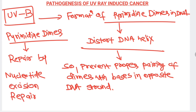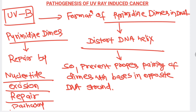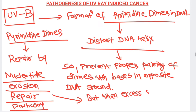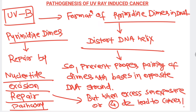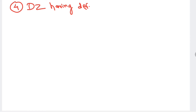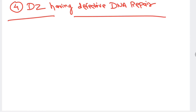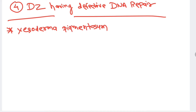Pyrimidine dimers are repaired by the nucleotide excision repair pathway, but with excessive sun exposure or an underlying disease, this repair mechanism can fail, leading to cancer development. Four underlying disorders involving defective DNA repair can lead to cancer: the first is xeroderma pigmentosum, which can lead to cancer at a very young age.